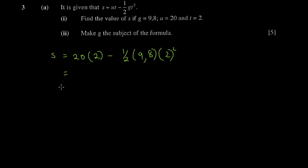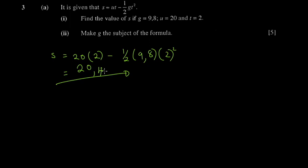So you say 20, then open bracket, times 2, then minus. For the half you can put 0.5. Then put 9.8 in brackets, then put 2, close the bracket, then say squared. You should get 20.4. So no need to work it out manually — you actually have your calculator with you, so just do this.